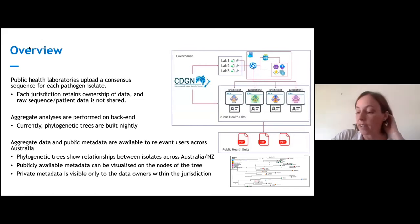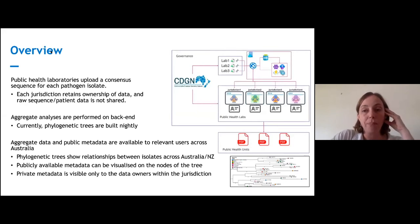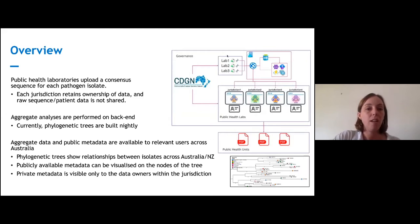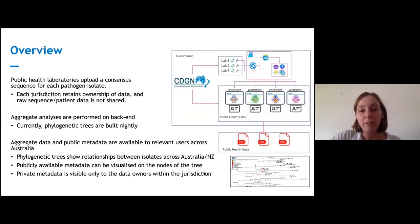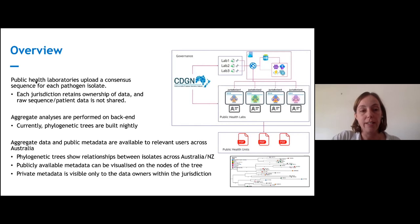We will go back to letting people upload raw data, and will also go back to using OzTracker for other pathogens. OzTracker was originally envisaged for bacterial outbreak tracking, but when SARS-CoV-2 came along it was the best option available. Public health labs upload their sequence data and retain ownership of that data — we don't share the raw sequence data. We do aggregate analyses, like building a phylogenetic tree on a national level, which is made available to relevant users in public health units around Australia.